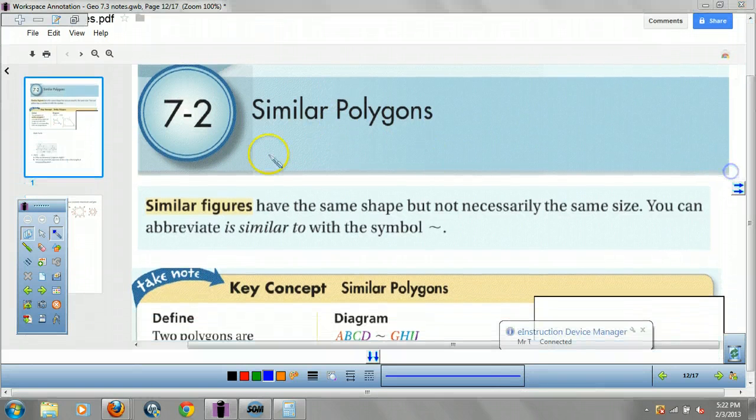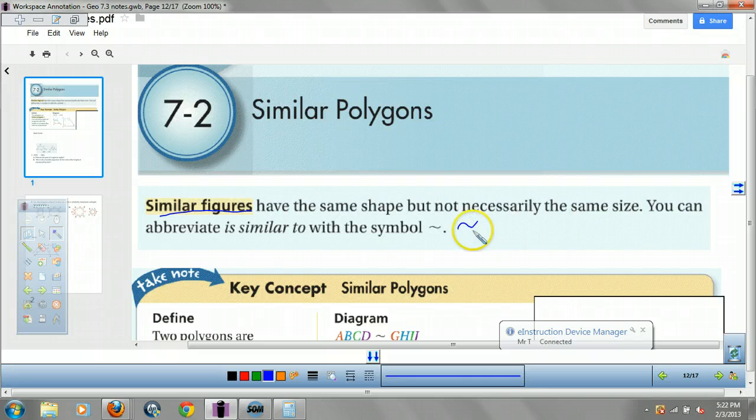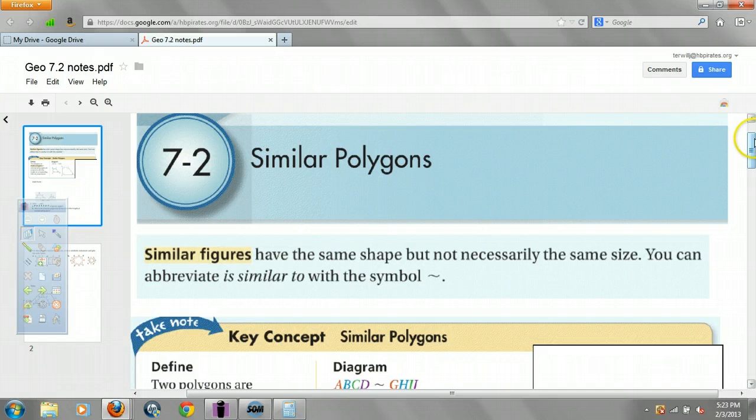So first off, what we need to know is that similar figures have the same shape but not the same size. And this little squiggly thing means being similar. For example, here's a stick figure. Here's a stick figure. They're similar. Same shape, different size. That's what it means to be similar.